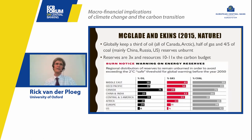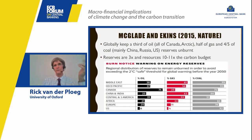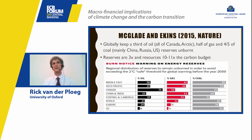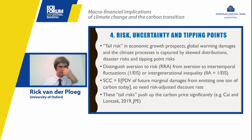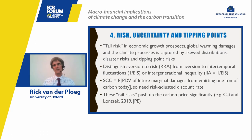A famous study in Nature by McGlade and Ekins shows that to achieve the two-degree target, we must keep a third of all oil in the ground, half of all gas, and 80% of all coal unburned. The problem is that most oil companies have reserves — and likely reserves called resources — that are three to ten times larger than what is permissible. So either those companies are overvalued, or climate policy is not yet credible. This is quite astonishing to contemplate.